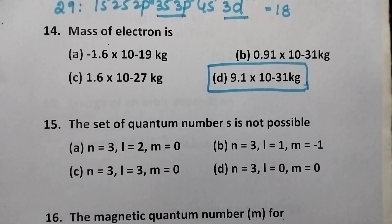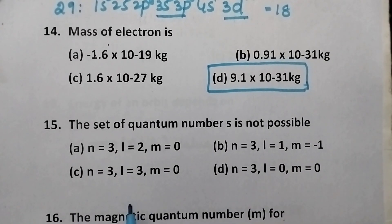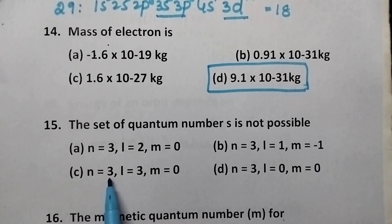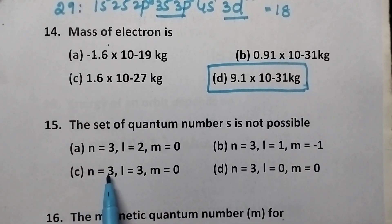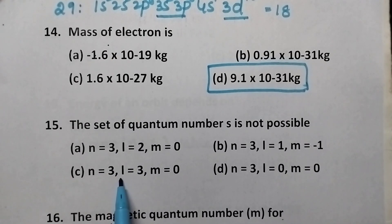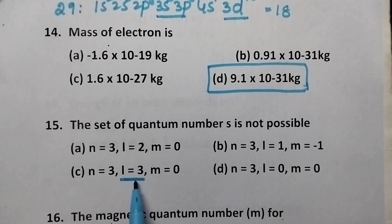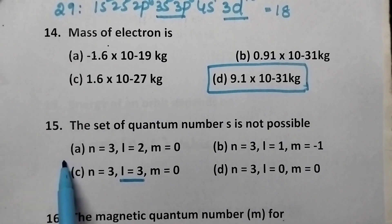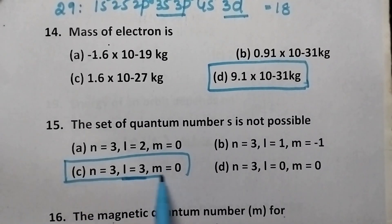The set of quantum numbers that is not possible — we have to check both L and M values. Coming to option C: N is equal to 3, L equal to 3. Remember, always L value should be less than N value. So option C is the right answer.